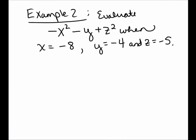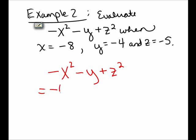In the second example, I want to evaluate the expression negative x squared minus y plus z squared. My first step is to remove each variable and replace it with empty parentheses, being careful to put the exponents on the outside of the parentheses. So the first term gives me: negative parentheses squared minus parentheses plus parentheses squared.